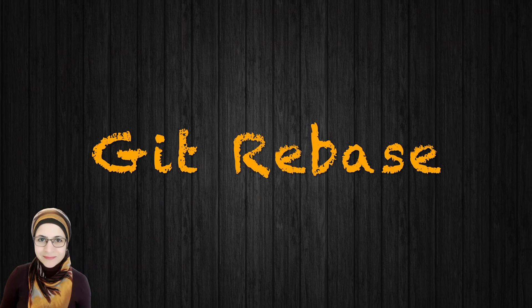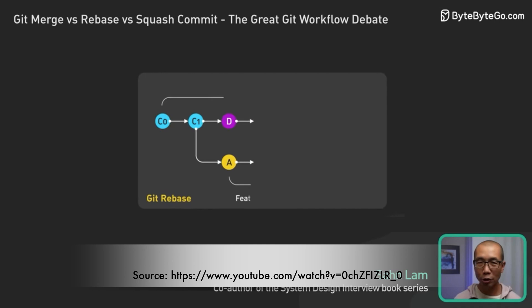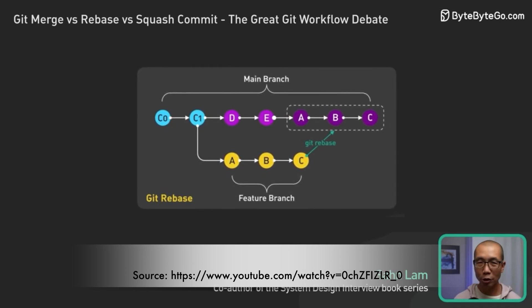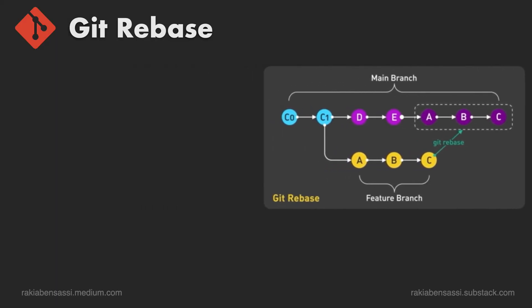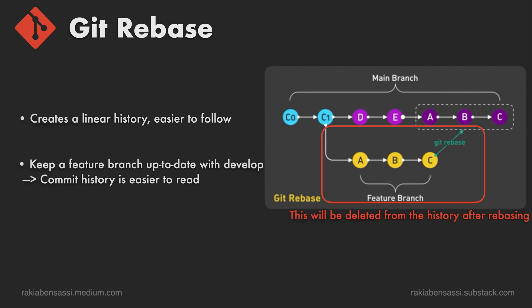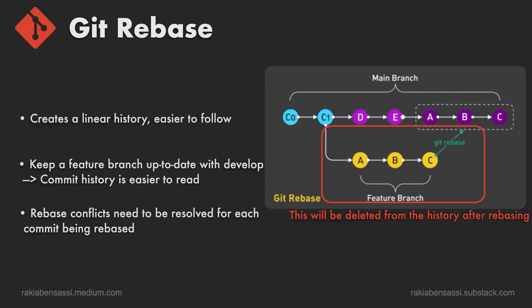Git rebase moves or rebases commits from one branch to another, rewriting the commit history to make it appear as if the work was done on top of the new base branch. Commit history: Git rebase creates a linear history, making it easier to follow. Usage in teams: it's often used to keep a feature branch up to date with the latest changes from develop before merging, minimizing merge conflicts and making the commit history easier to read. Rebase conflicts need to be resolved for each commit being rebased — this can be more tedious but results in cleaner history.